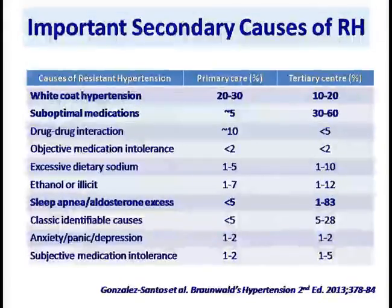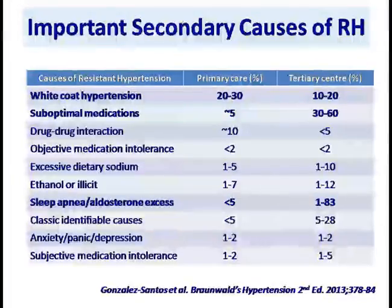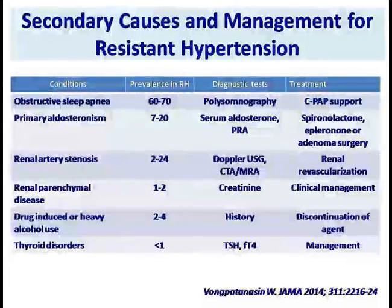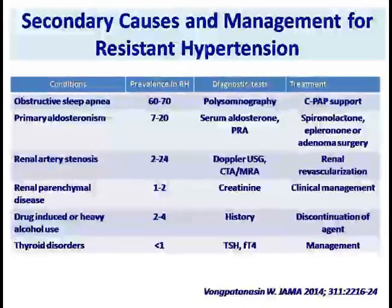What is the prevalence of these causes? A study published in Brown's textbook on hypertension says white-coat hypertension is the commonest cause in primary care, though not as common in tertiary care. Suboptimal medication is the second most important cause and very common in tertiary care practices, with almost half of patients having suboptimal medication. Sleep apnea, depending on where you practice, is present in 1 to 83% of patients with resistant hypertension. In a review published in JAMA last year, obstructive sleep apnea is the number one cause of resistant hypertension, primary aldosteronism is number two, and renal artery stenosis and drug-induced causes follow.